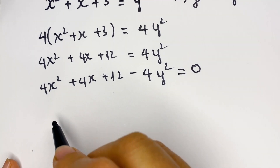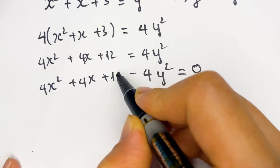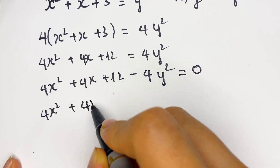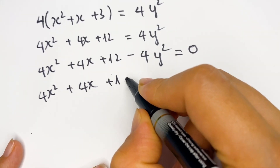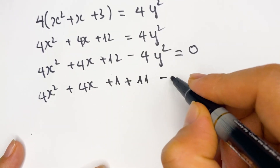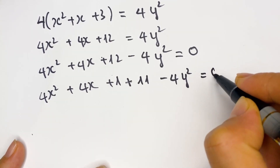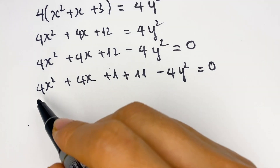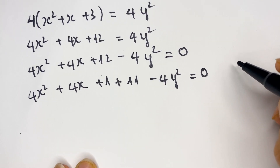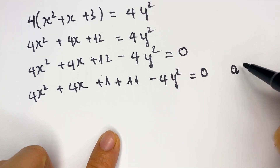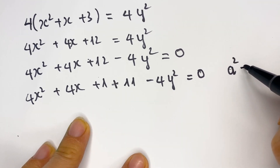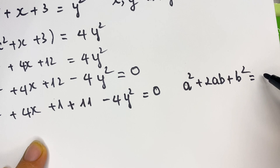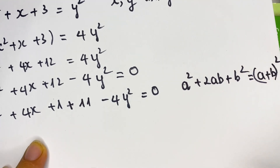Everyone see, you need to break down 12 as 1 plus 11. So we have 4x squared plus 4x plus 1 plus 11 minus 4y squared equals 0. Remember the identity: a squared plus 2ab plus b squared equals (a plus b) squared.